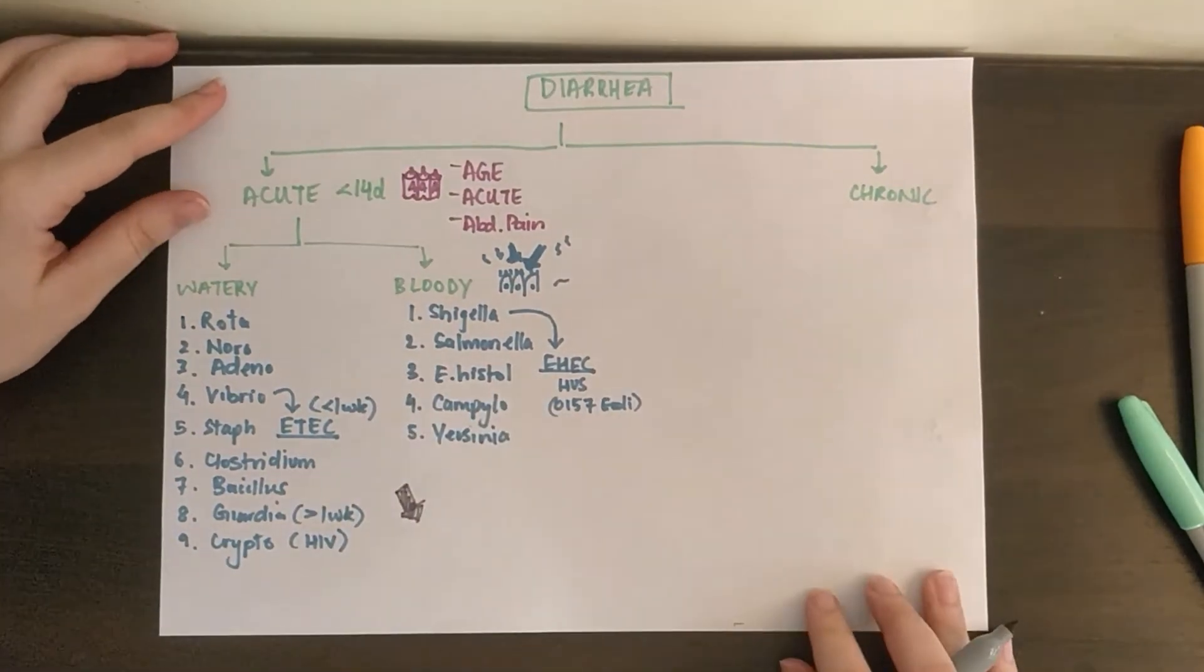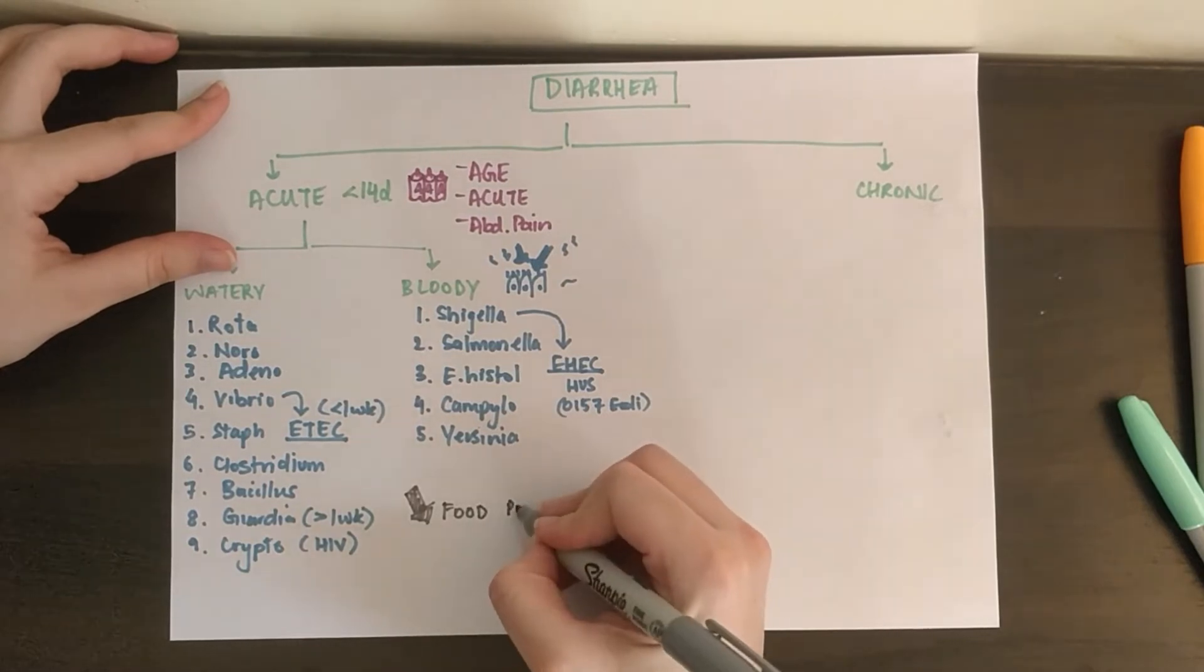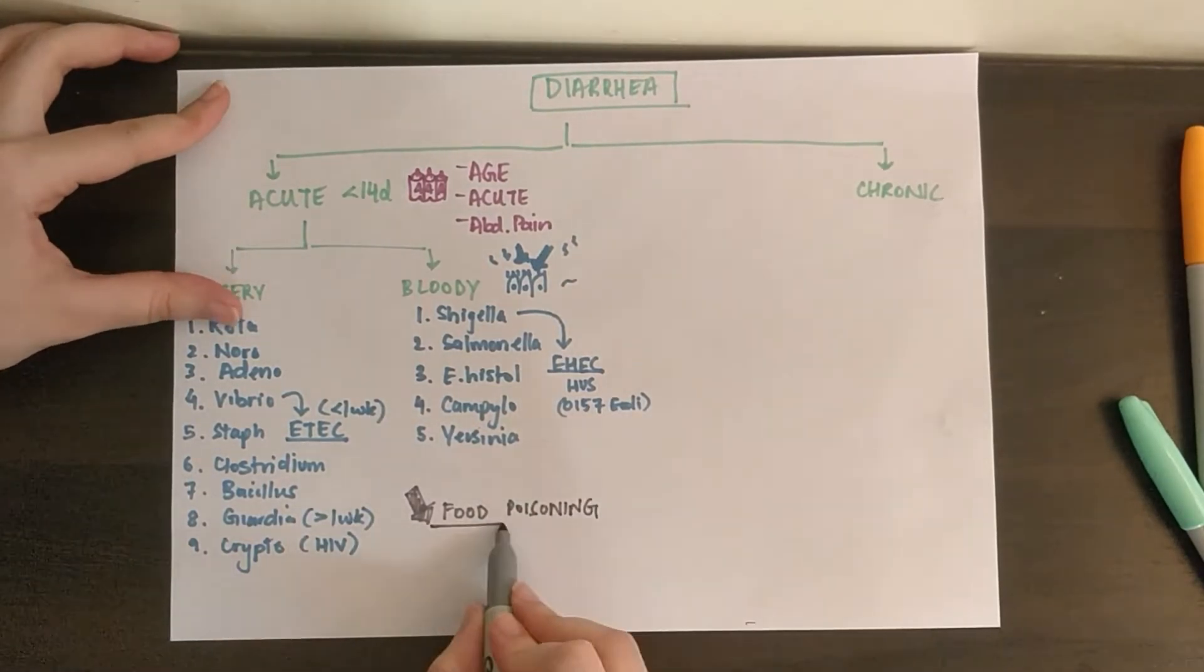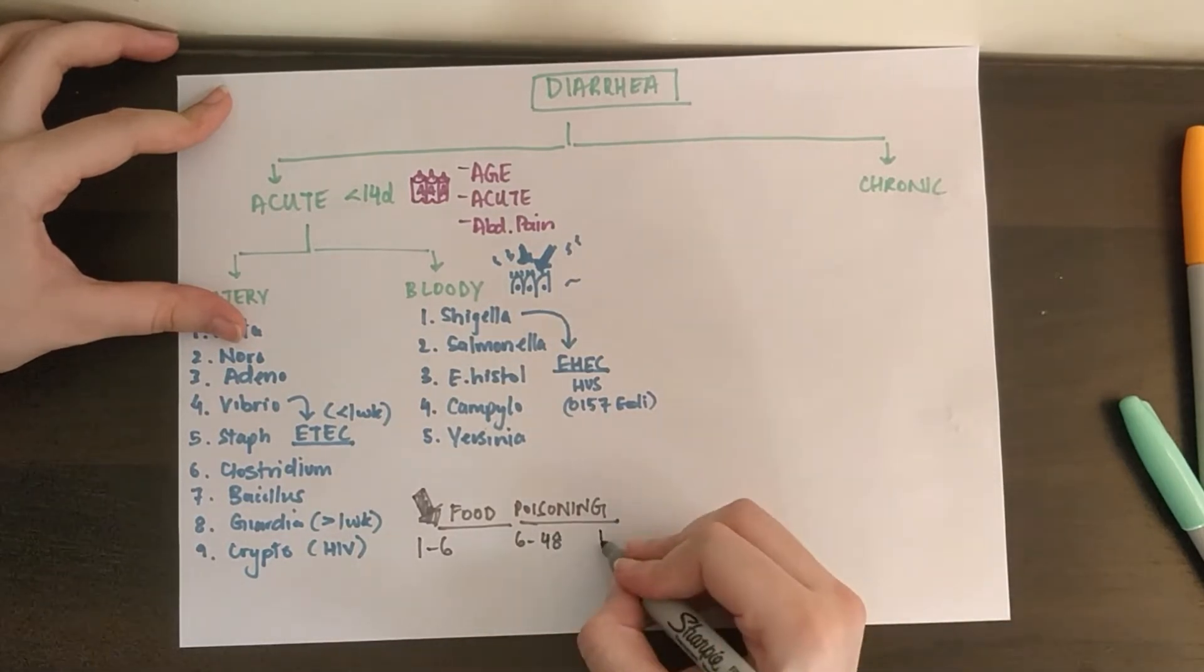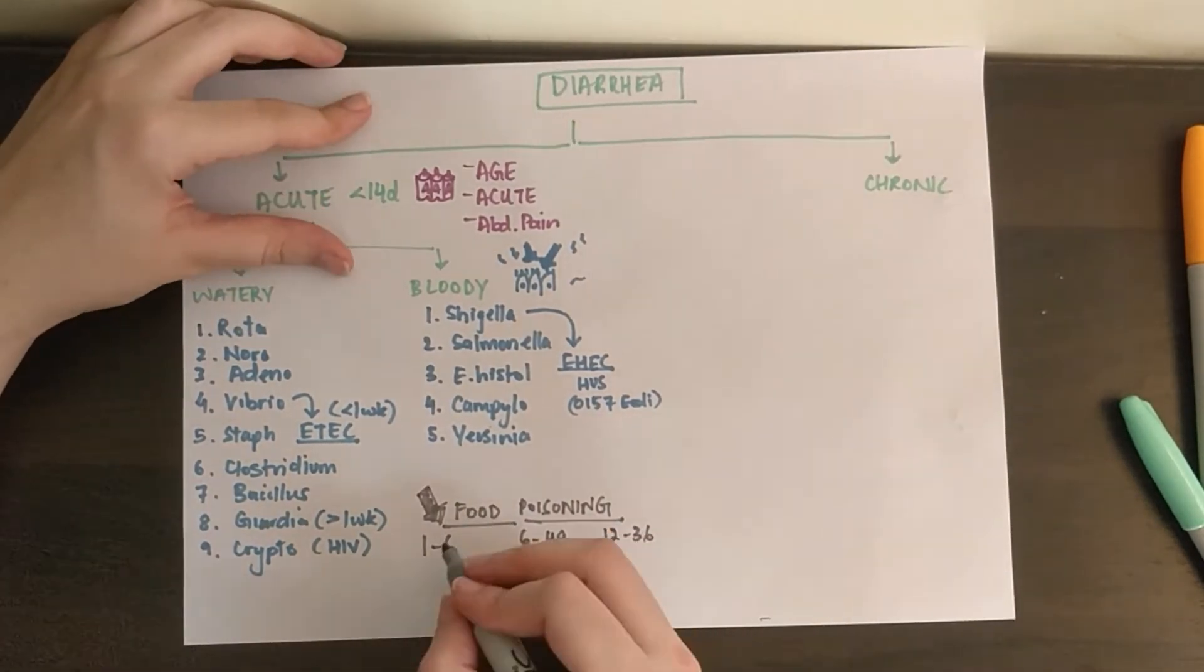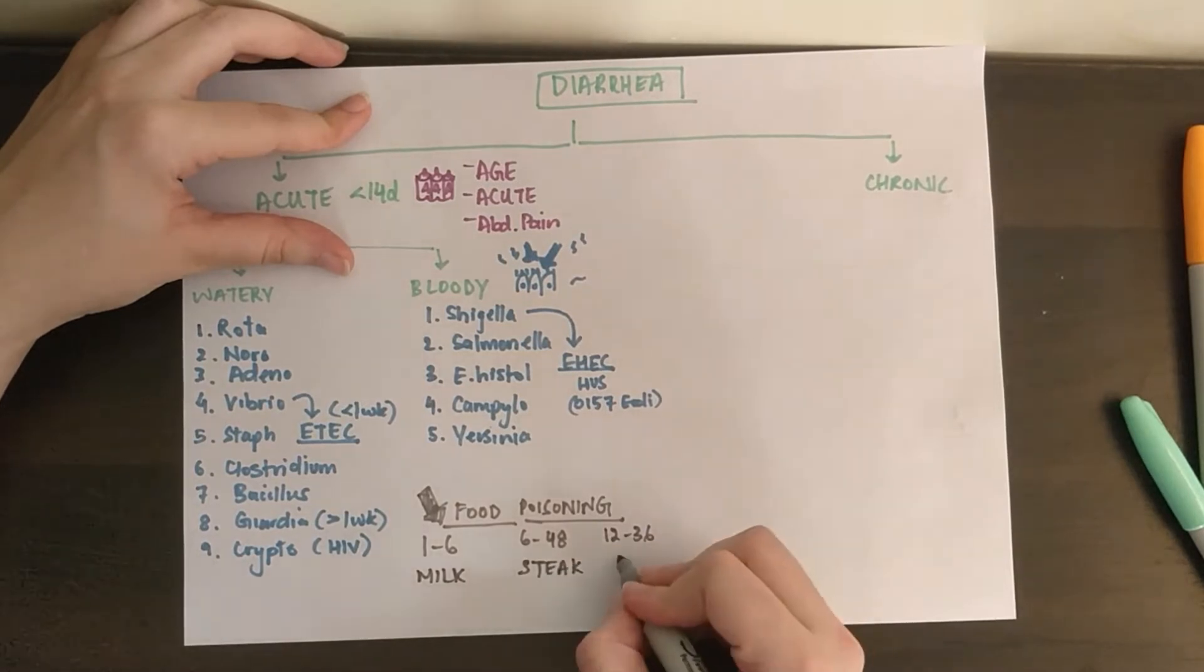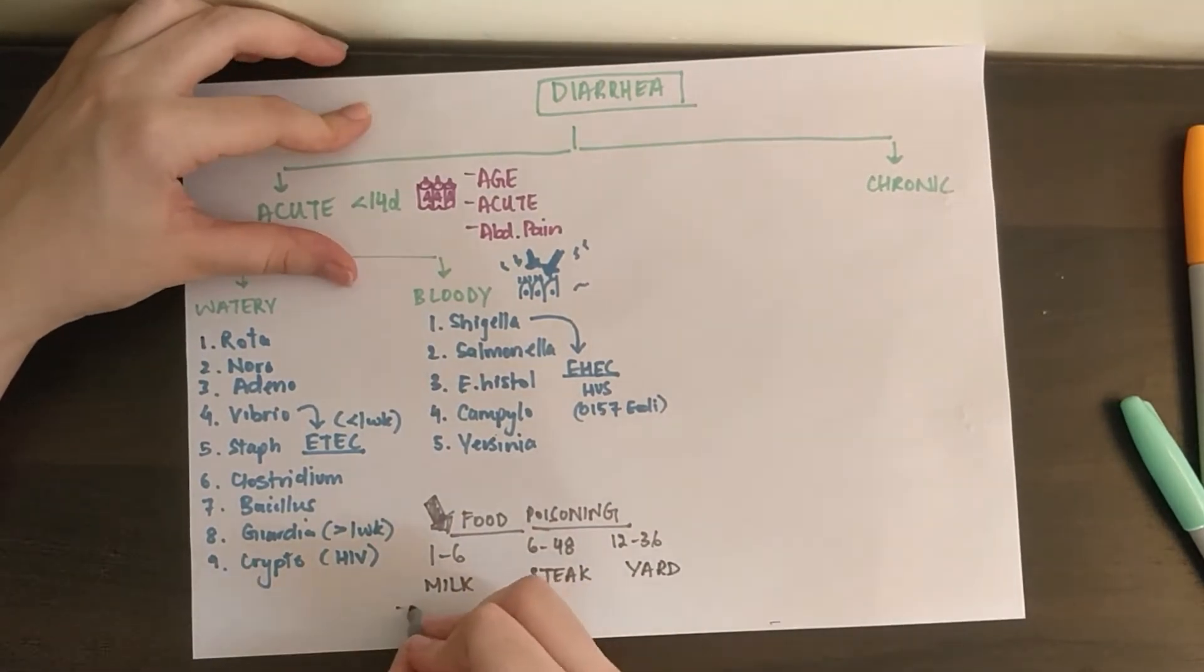Another way to classify all of these pathogens and sort out this bacterial mess is to divide them by the number of hours they take to display their symptoms, i.e. the food poisoning countdown. Broadly, we'll divide it into less than 6 hours, 6-48 hours, and more than a day. Here, I want you to remember my milk steak brings all the boys to the yard.